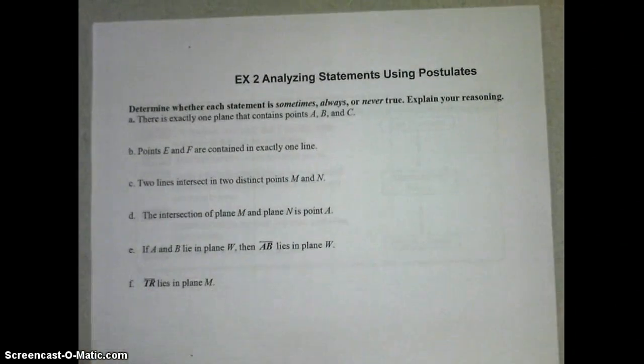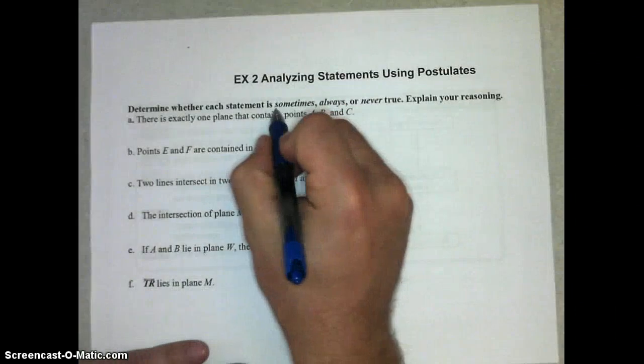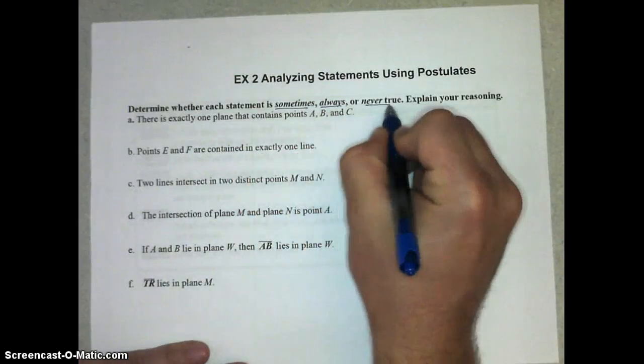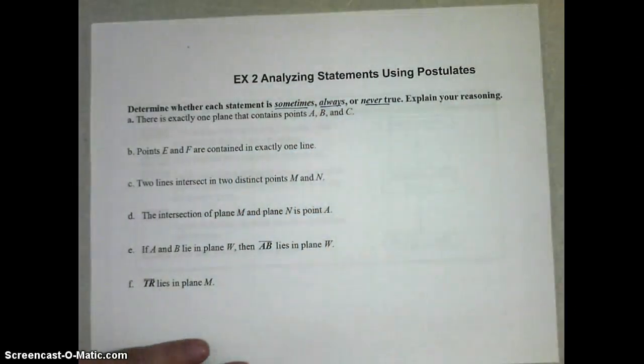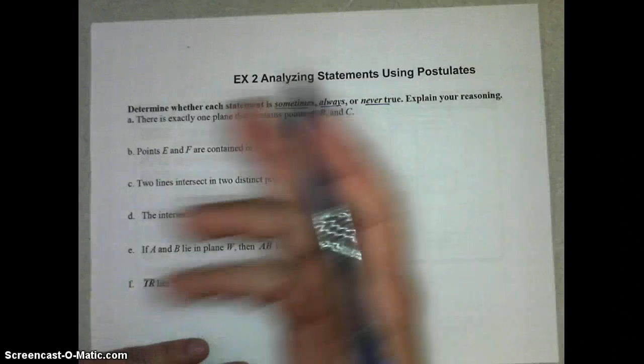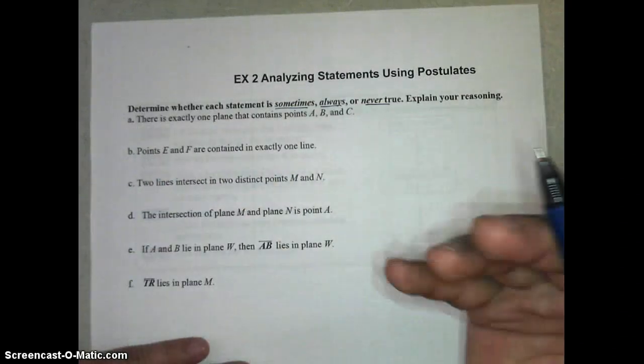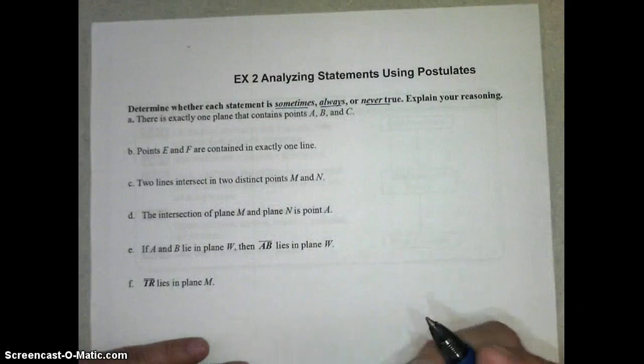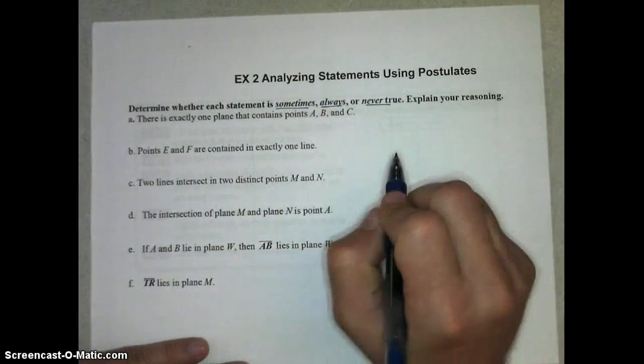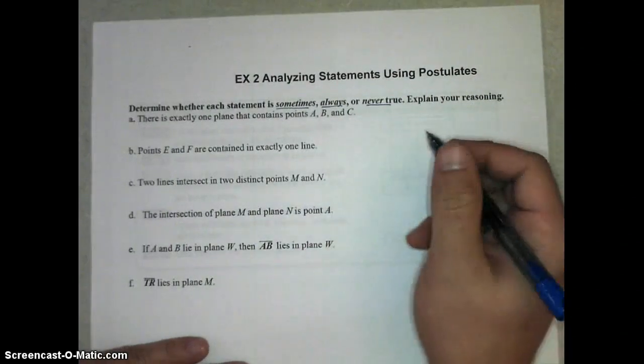In example two, we're doing some of the same kind of stuff, but these could be sometimes, always, or never true, and we don't have a specific diagram to look at. And so we are just making general statements about these points that exist somewhere, but we don't actually see them in a diagram. We are to explain our reasoning, again, by citing some different postulates.